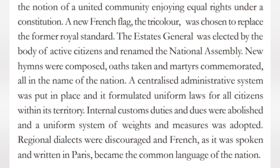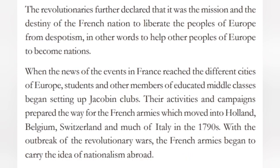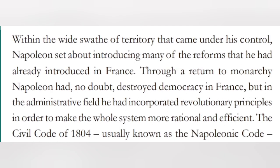Regional dialects were discouraged, and French as spoken and written in Paris became the common national language. The revolutionaries further declared that it was the mission and destiny of the French nation to liberate the peoples of Europe from despotism — in other words, to help other peoples of Europe to become nations. When news of events in France reached different cities of Europe, students and educated middle classes began setting up Jacobin clubs, preparing the way for the French armies, which moved into Holland, Belgium, Switzerland, and much of Italy in the 1790s.